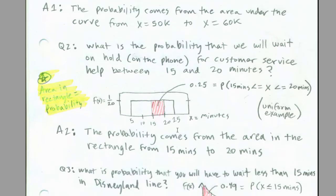Another example, and this is for our uniform distribution, where we're going to be dealing with a rectangle. We're allowed to ask a question like, what is the probability that we will wait on hold on the phone for customer service help between 15 and 20 minutes? The answer will come from area determined by a width and height calculation. We'll find out that the probability is 0.25.